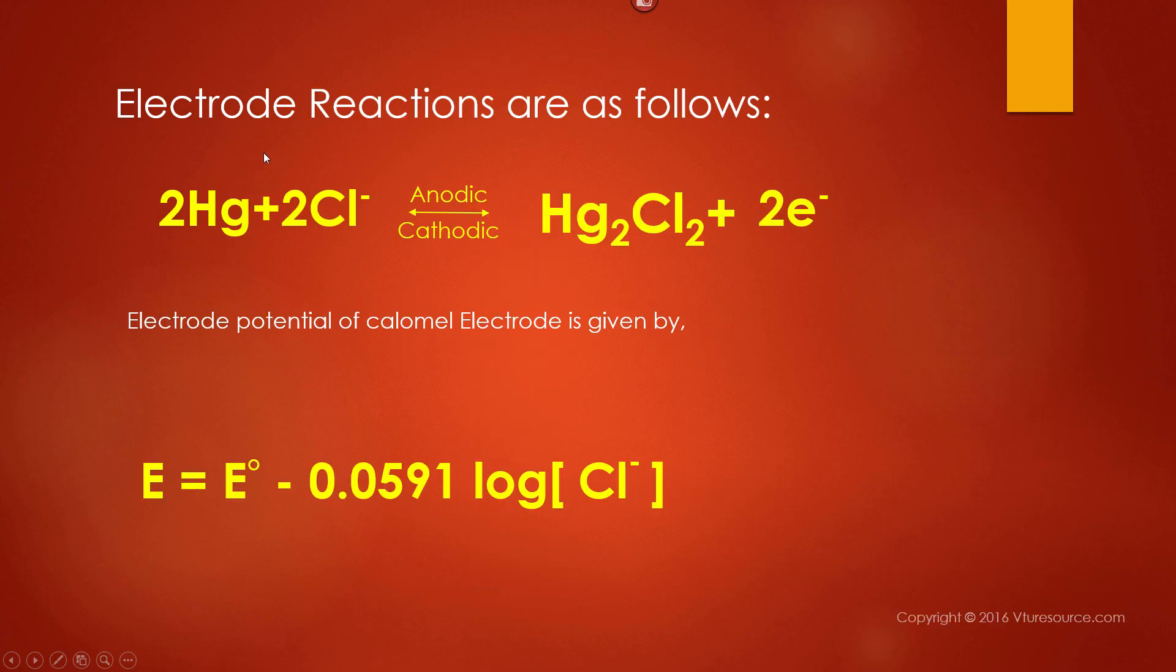Calomel electrode acts both as anode as well as cathode, depending upon the electrode with which it is coupled. If calomel electrode acts as an anode, the anodic reaction is as follows.